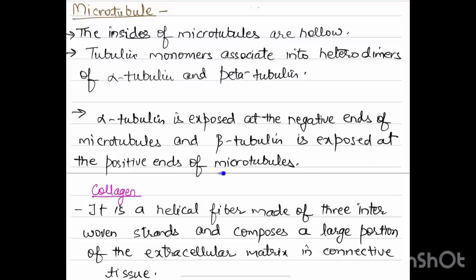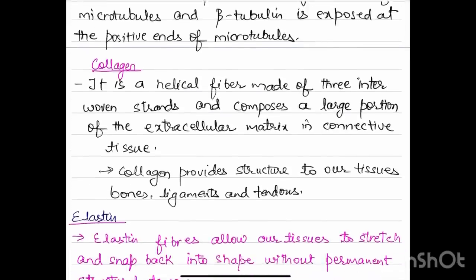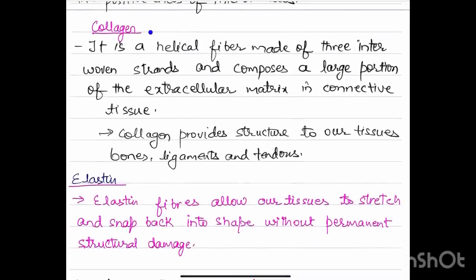Next structure is collagen. It is a helical fiber made of three interwoven strands and composes a large portion of the extracellular matrix and connective tissue. Collagen provides structure to our tissues, bones, ligaments, and tendons.